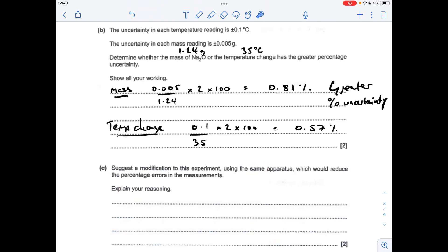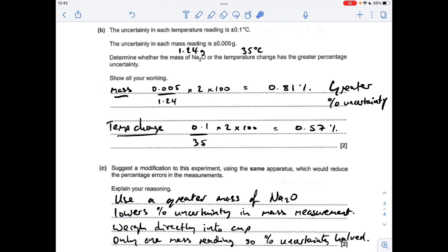And then finally a modification using the same apparatus that would reduce the percentage error in the measurements. Obviously we can't use a more accurate balance because that wouldn't be the same apparatus, so a good way to reduce your percentage error is to use more stuff. So I would just say use a greater mass of sodium oxide, and I would back that up by saying that this lowers the percentage uncertainty in the mass measurement. Alternatively you could say weigh the sodium oxide directly into the cup, and because of that you're only doing one mass reading so your percentage uncertainty would half because you're not going to have to do that times two.